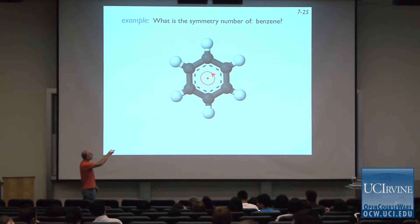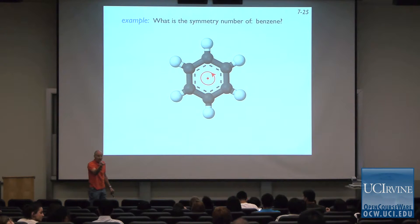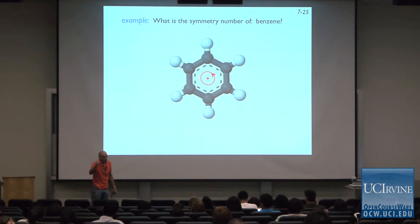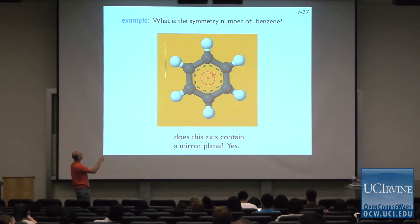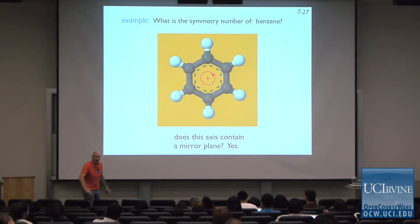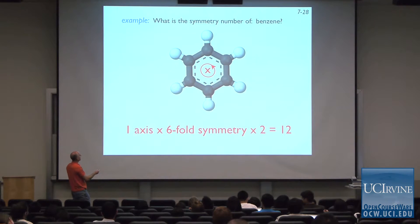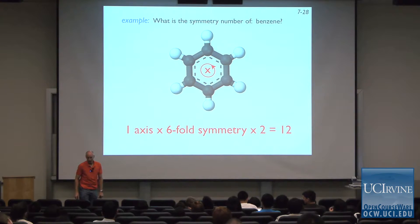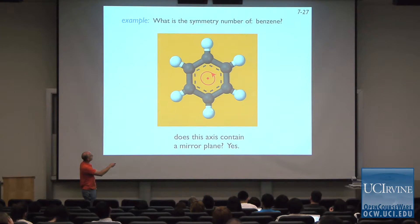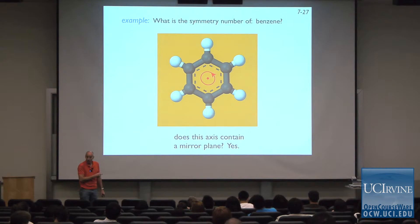I could also choose the axis going right through the center of the molecule coming out of the screen. How many of those axes are there? One. Is there a mirror plane? Yes — it's right in the plane of the screen, cutting the molecule right in half. The calculation is then one axis times six-fold symmetry times two equals 12. You get the same answer. For that axis it's six-fold symmetry — one, two, three, four, five, six — not two-fold.